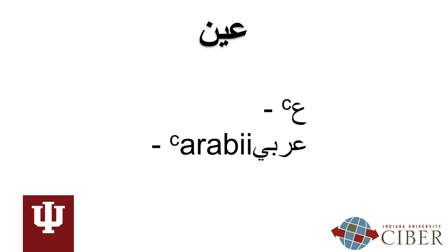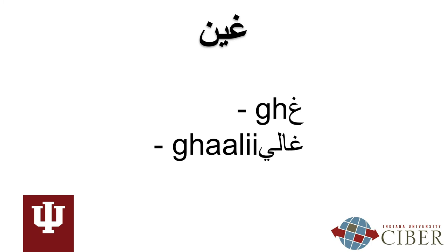The sound Ayn, which is perhaps the most distinct sound in Arabic, will be represented with a superscript C. Listen to the Ayn in the word for the language: Arabi. Practice pronouncing the sound Ayn with the word Arabi after me: A — Arabi. The letters GH will represent the sound Ghayn. Imagine gargling water after brushing your teeth — this is the sound that Ghayn makes. Listen to the letter pronounced in the word ghali, meaning expensive. Now practice pronouncing the sound Ghayn and the word ghali after me: Ghayn — ghali.